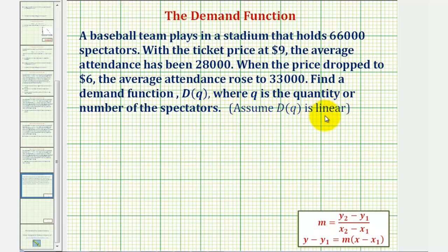So because D(q) is linear, we'll find the equation of D(q) in slope-intercept form with the form y equals mx plus b. But because our function is D(q), we would have D(q) equals m times q plus b.